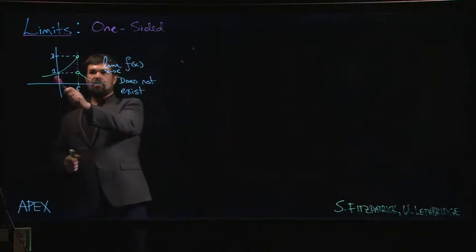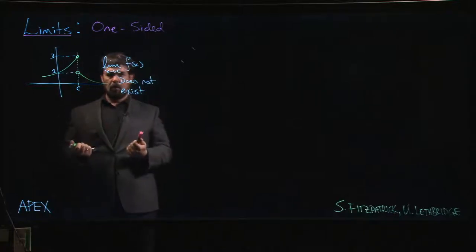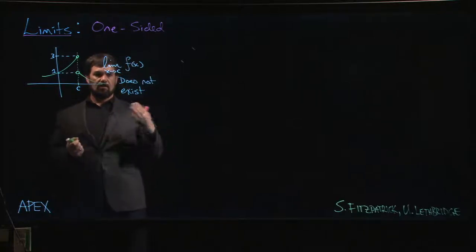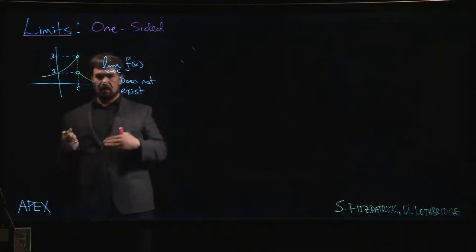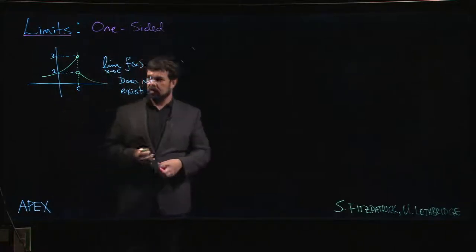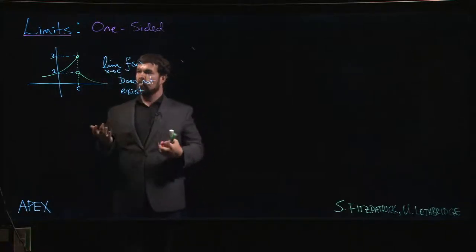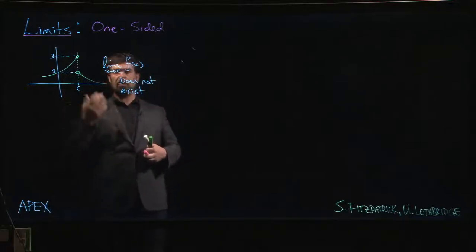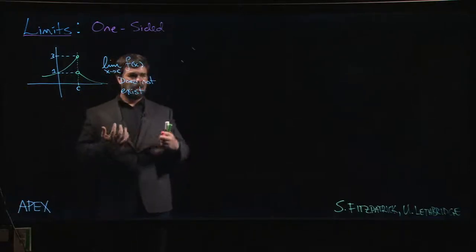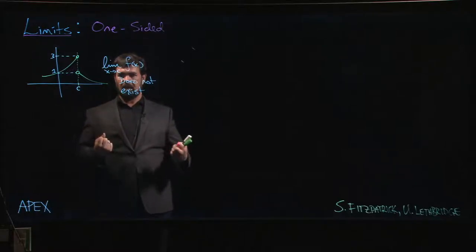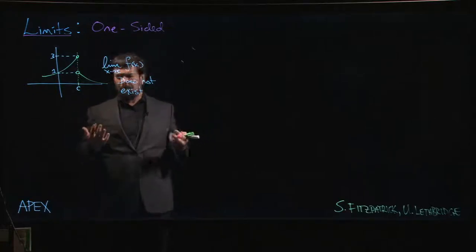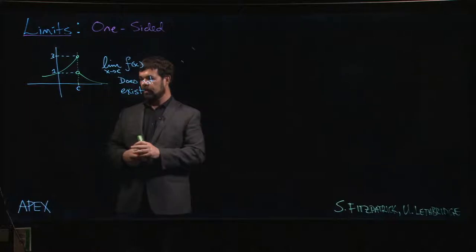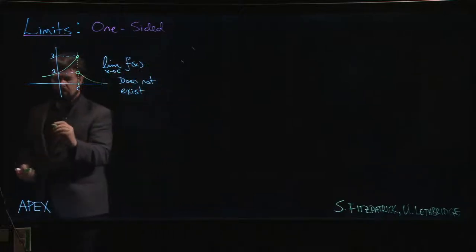The limit doesn't exist because the function approaches different values depending on the direction you're approaching from — left or right. There's precise language for this, because if you try to explain in your own words why the limit doesn't exist in a context like this, it's actually a little tricky to come up with the right words to explain exactly why there is no limit here.